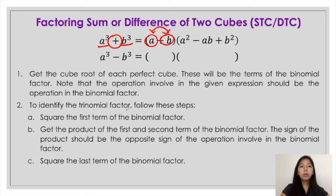Next, working on the difference of two cubes, we follow the same steps. First, get the cube root of the two terms: a cube would simply be a and b cube would simply be b. This time, the operation involved is subtraction, so the operation in the binomial would be the same.